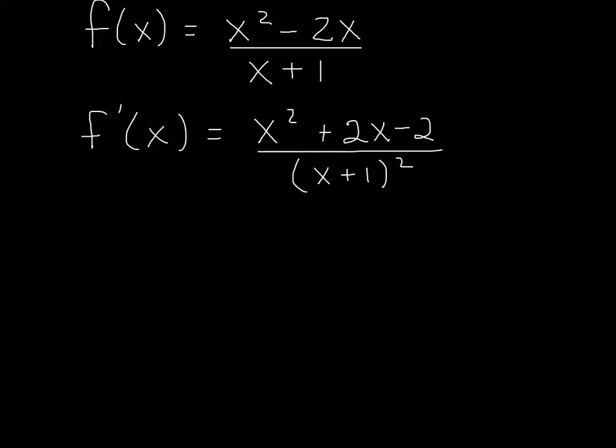To recap what we just did in the first derivative, we started with the function x squared minus 2x over x plus 1, and we went through the quotient rule process and found that its first derivative is x squared plus 2x minus 2 over x plus 1 quantity squared.